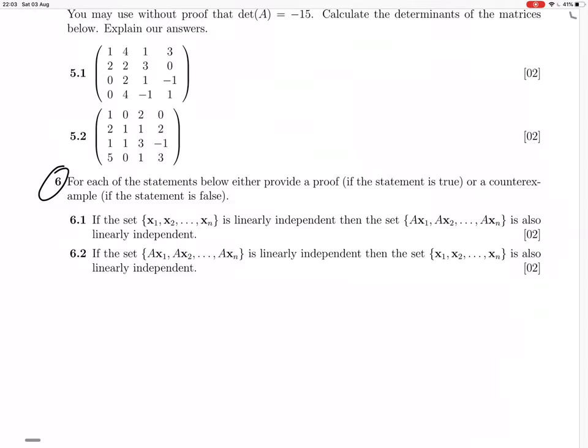No, what if the matrix A was a zero matrix? Then you'd have that set would just have a zero vector, and that's a dependent set. So 6.1 is going to be false, and the counterexample we can give is...